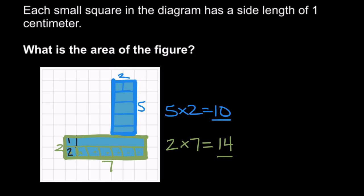So this top rectangle here that we have in blue covers 10 square centimeters, plus the bottom rectangle that we outlined in green covers 14 square centimeters. So in total, the entire figure covers 24 square centimeters.